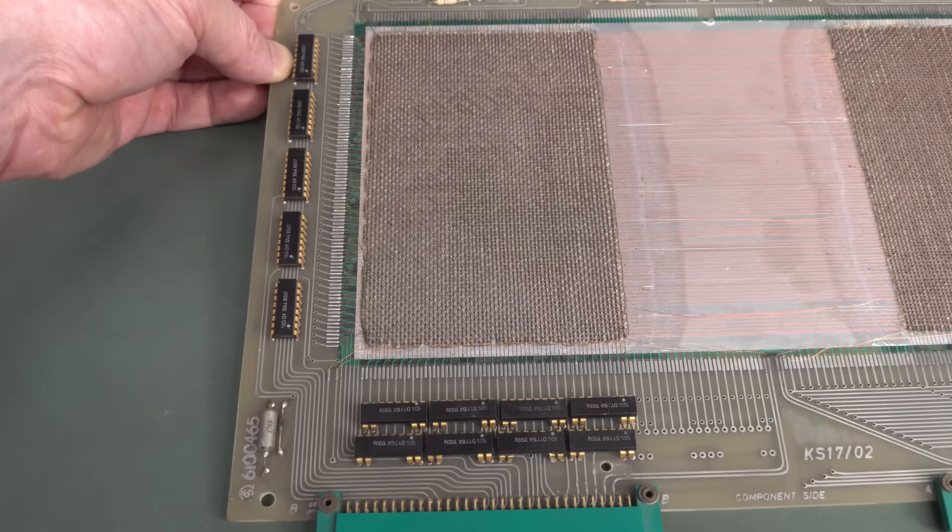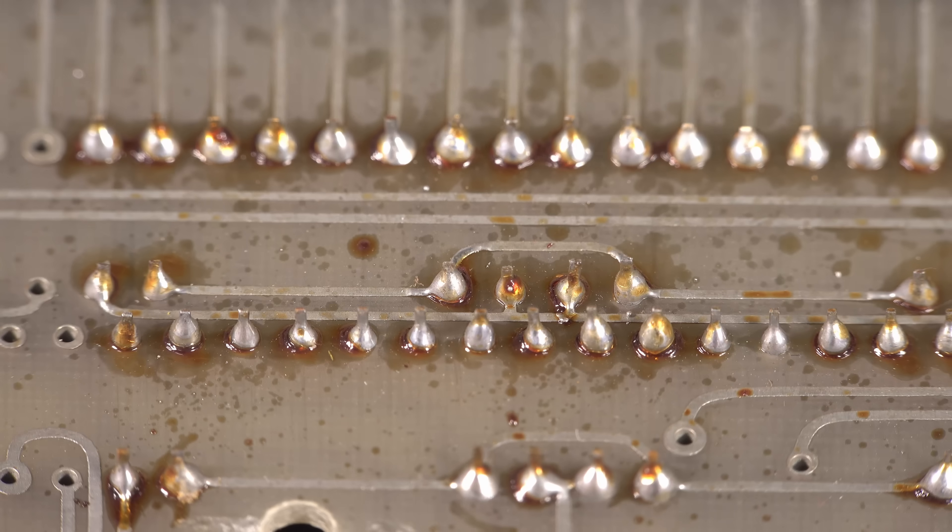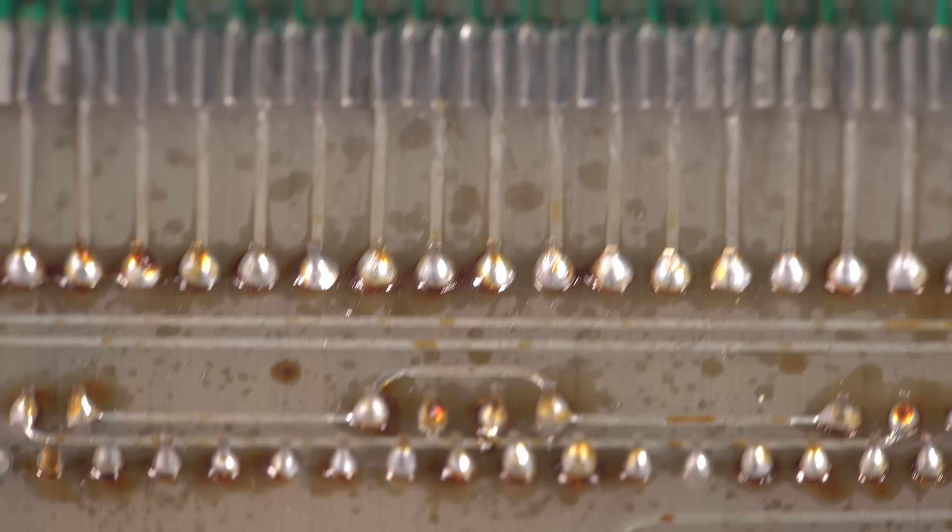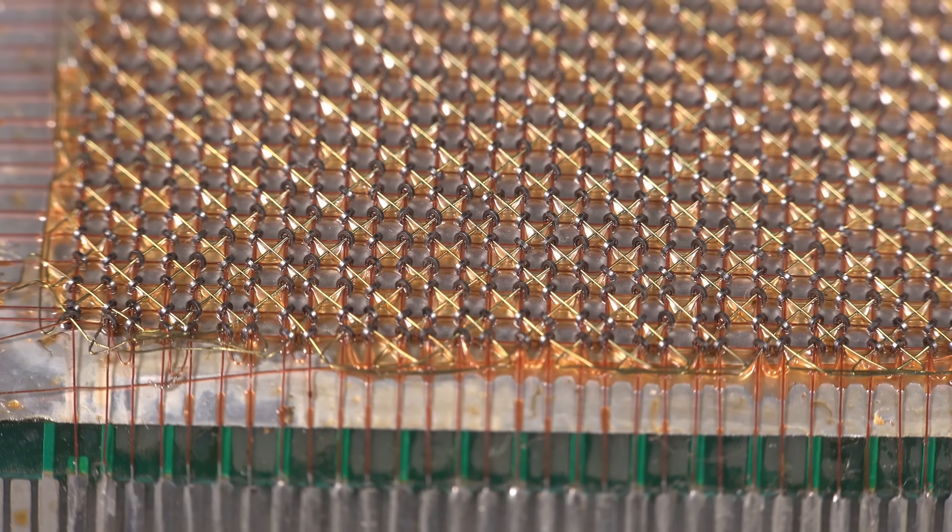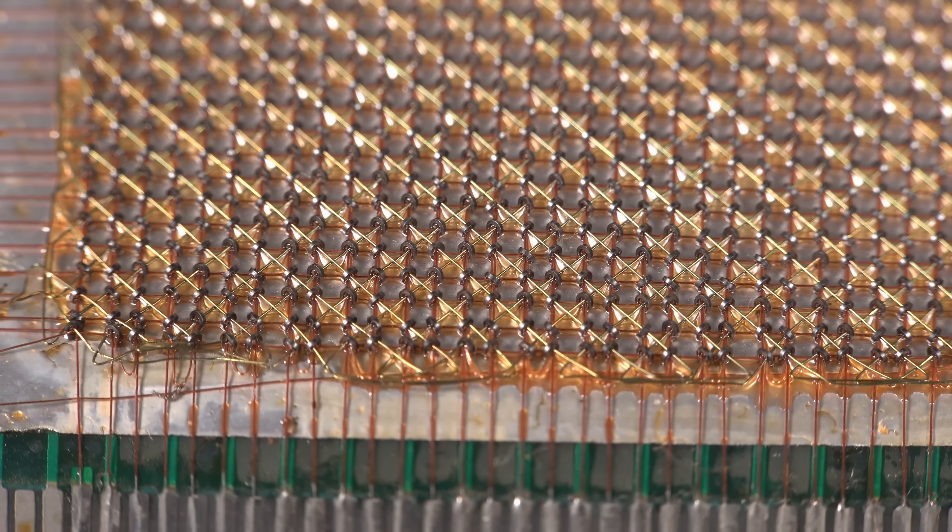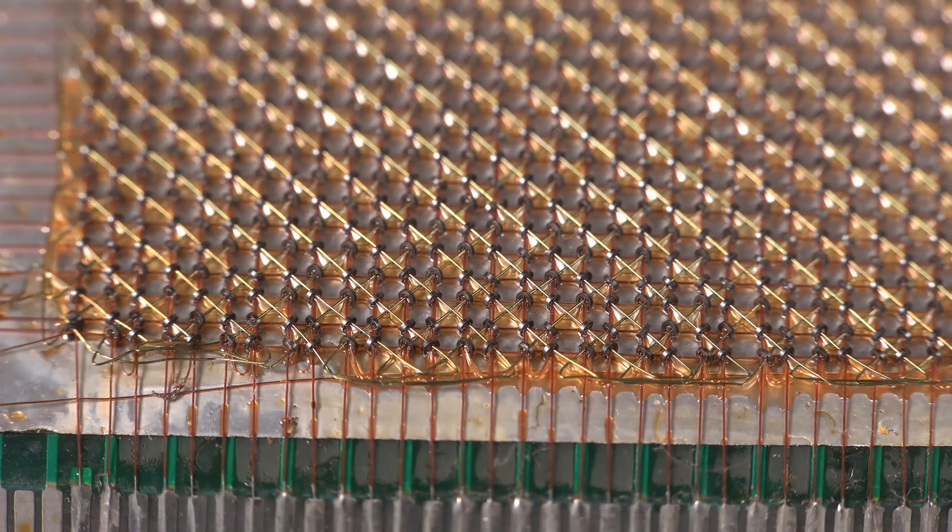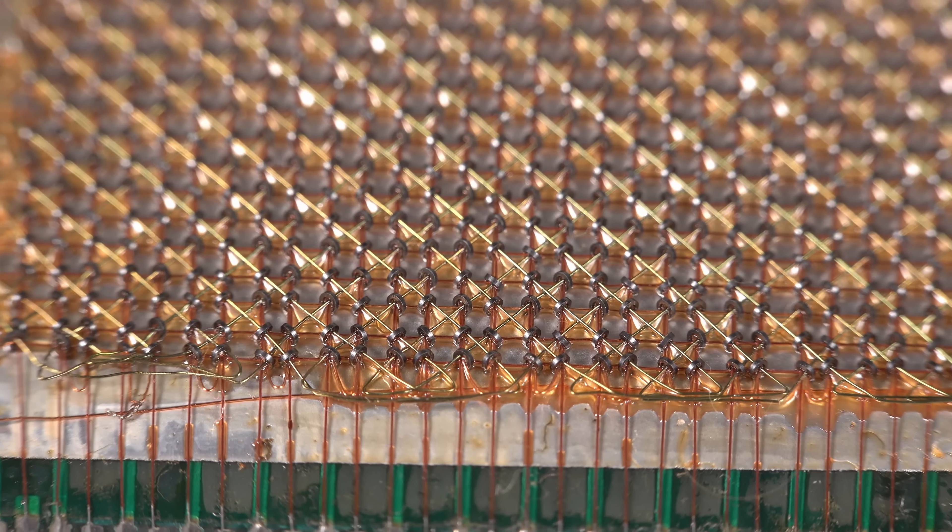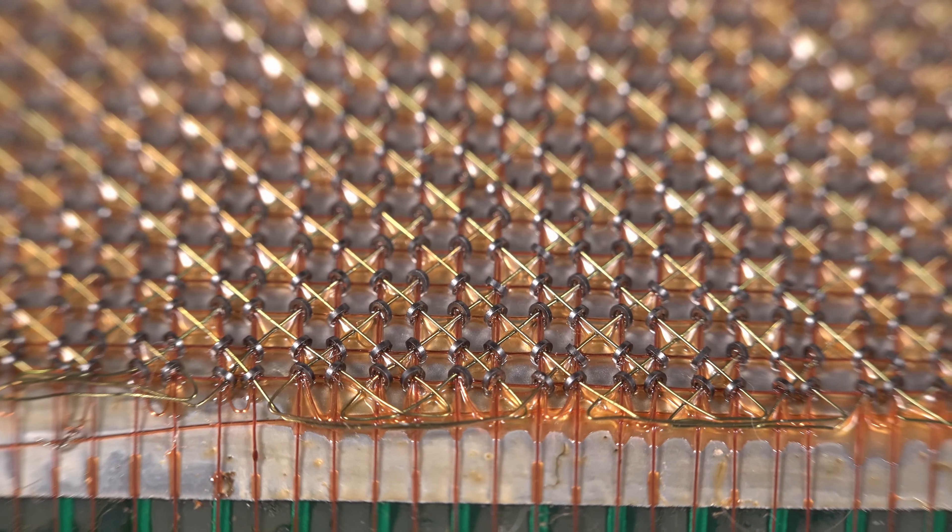Let me show you this up close. So I have to get the macro lens out. In addition to some very poor solder joints there, that's terrible, Muriel. Here are the individual ferrite rings. Hopefully you can see those, and you can see that there's actually three wires running through each little ferrite toroidal ring there.